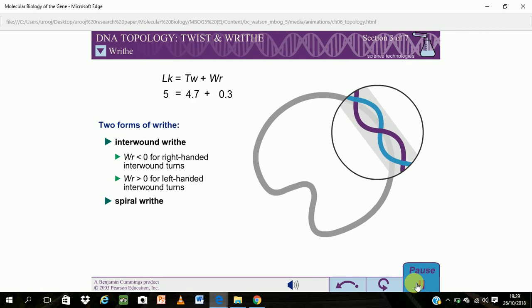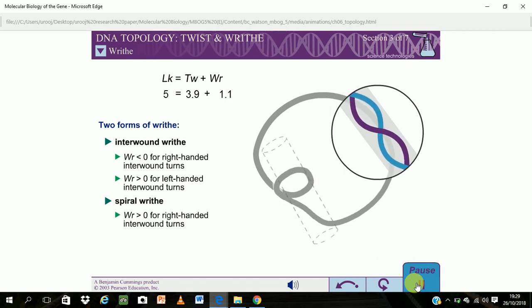If right-handed DNA writhes to form a right-handed spiral coil, the twist number decreases. Therefore, right-handed spiral turns are assigned positive writhing numbers. Note that this is the opposite of right-handed interwound turns.